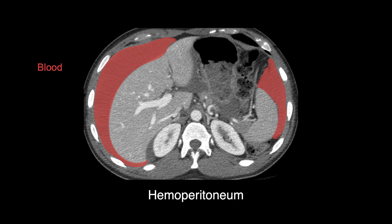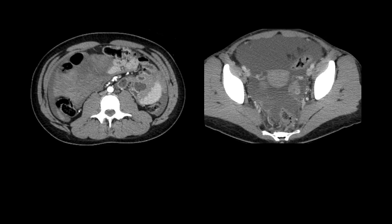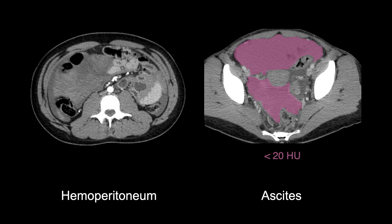Hemoperitoneum is the term for blood in the peritoneal cavity. In this example, there is a large amount of hemoperitoneum surrounding the liver and spleen. The blood has a density of 35 Hounsfield units (HU), which is much greater than simple fluid. At first glance, hemoperitoneum might look similar to ascites, but blood will have an increased density, and you may even see denser areas within the blood indicating clot formation. Ascites is generally less than 20 Hounsfield units, whereas blood will range in density from 30 to 70 Hounsfield units, or even higher if there is active bleeding containing contrast.